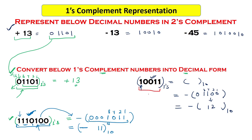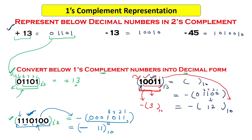To highlight the difference between representations: if we interpret 10011 as a sign-magnitude number instead, the leading 1 means negative, and the remaining bits 0011 give magnitude 1 + 2 = 3, so it would be minus 3. The same binary number represents minus 12 in one's complement but minus 3 in sign-magnitude — depending on how we treat the binary number.